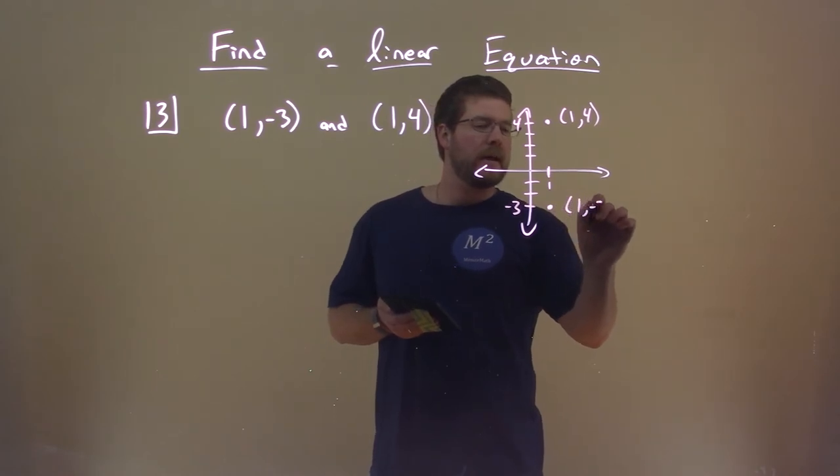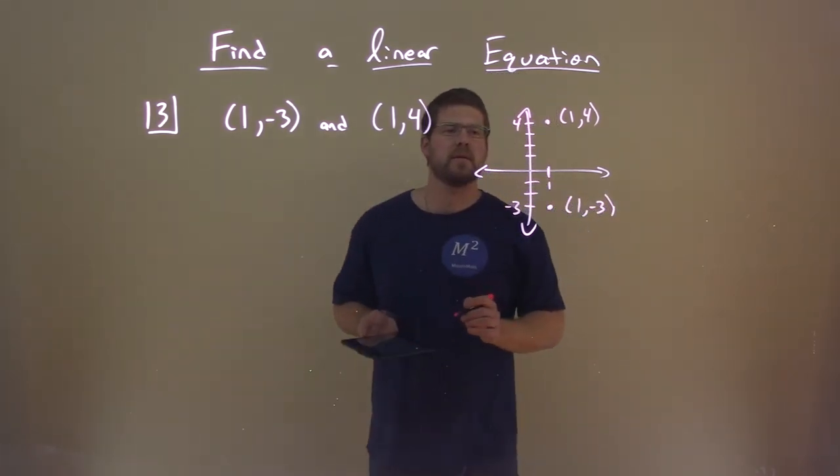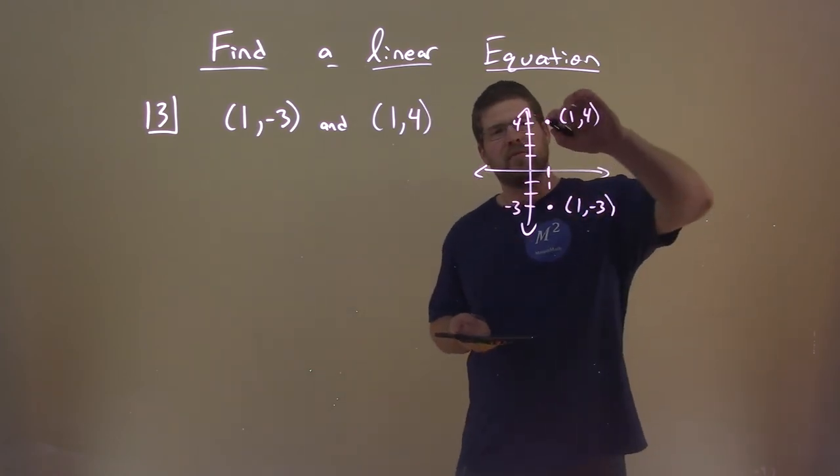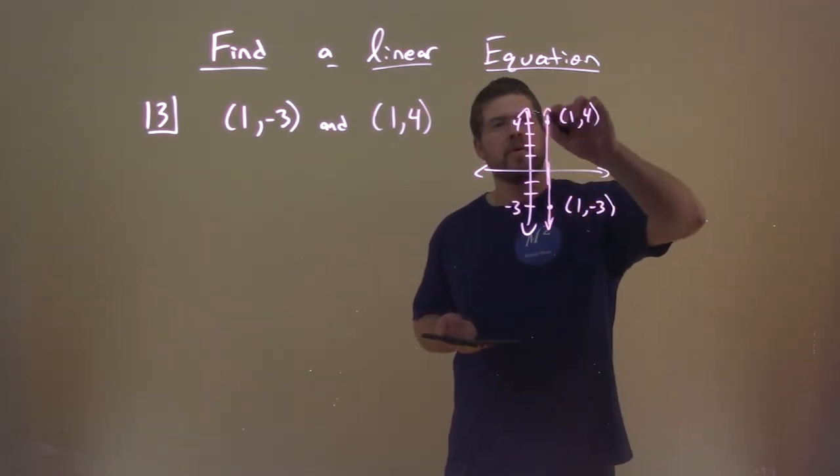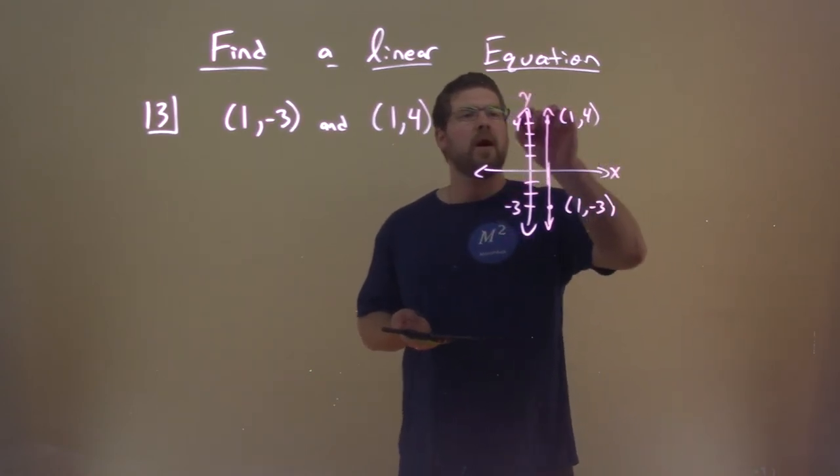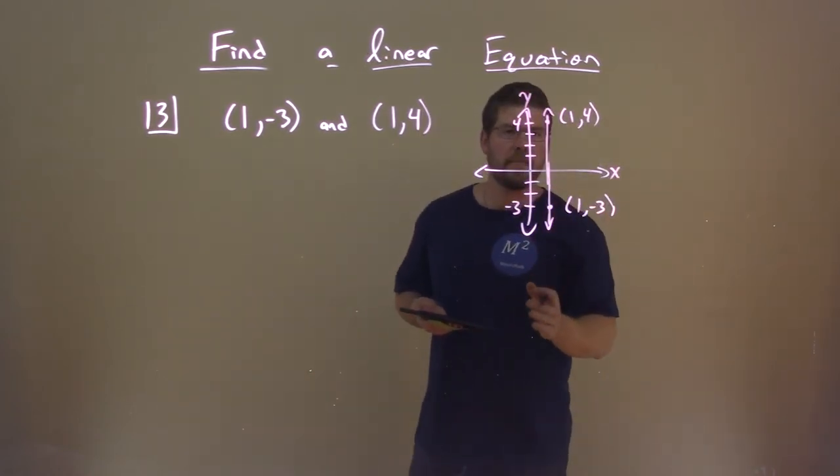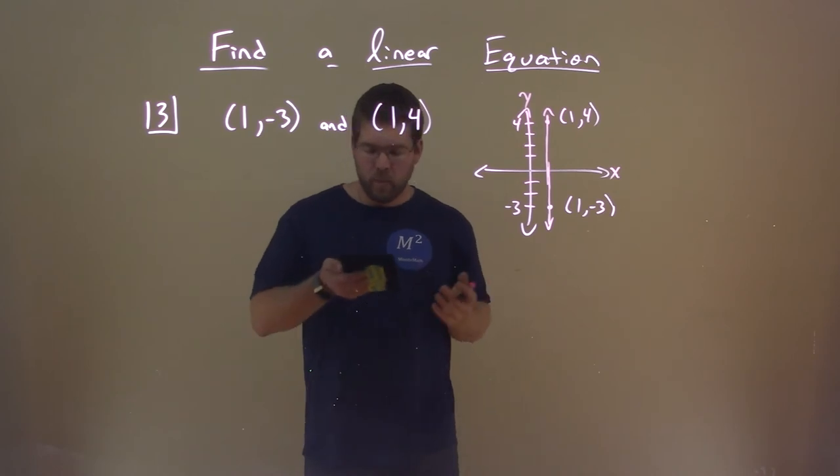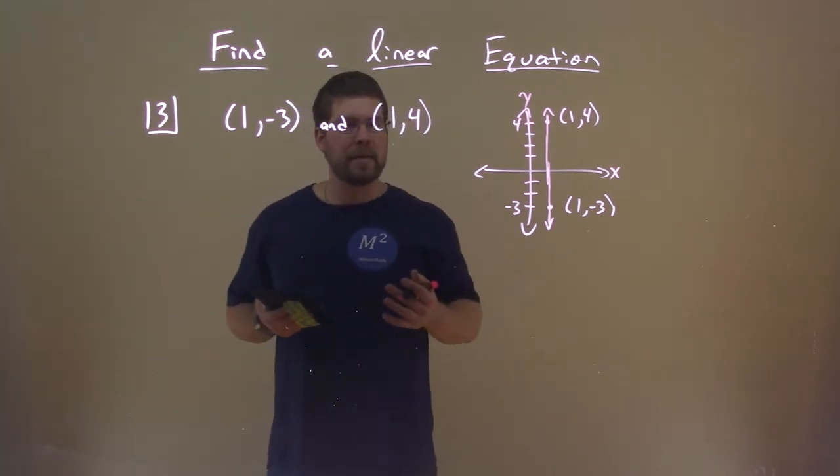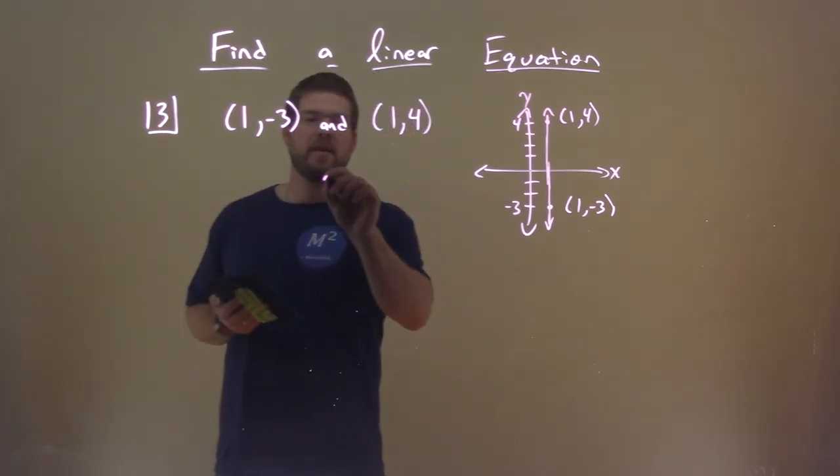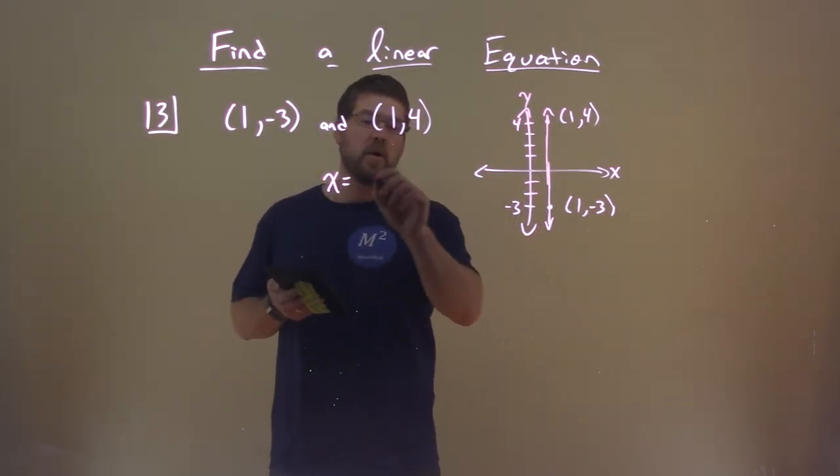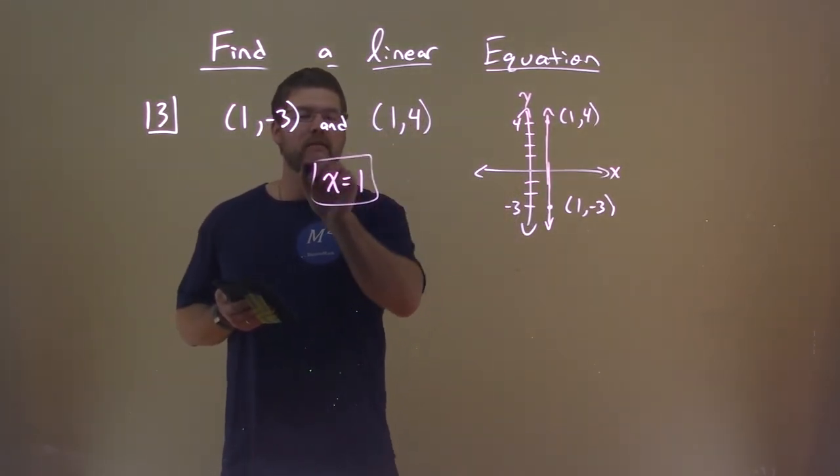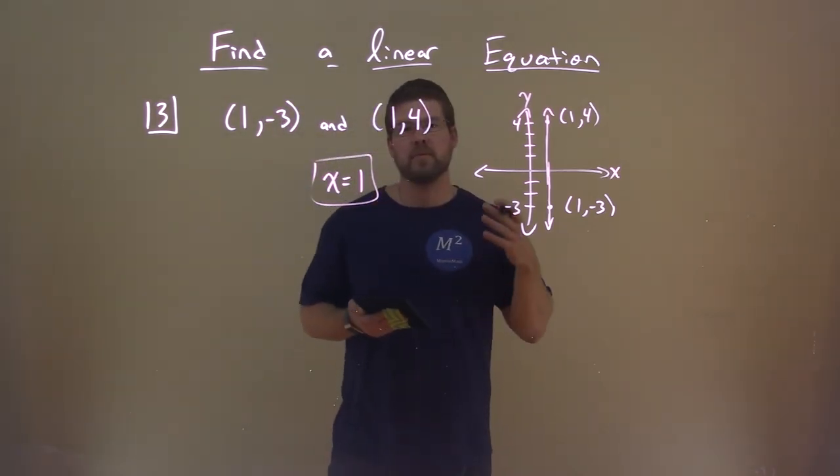(1, -3). And you're looking at this, and you're thinking, well, what kind of line does that? It's a vertical line, right? A vertical line goes through. This is the X axis and this is the Y axis. And that's a vertical line. So when we see that, well, what's the equation of a vertical line? And those are written as X equals just the X value, which is 1. So this equation of a line is just X equals 1.